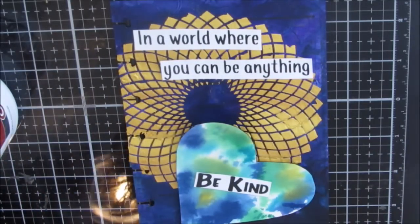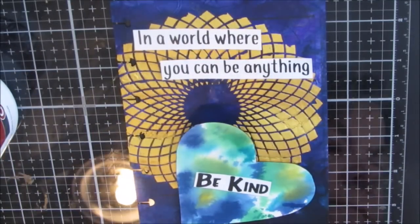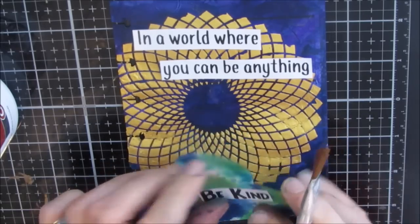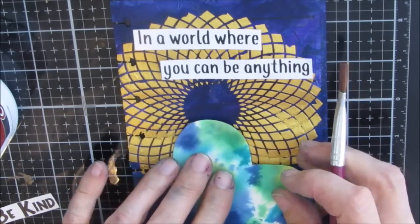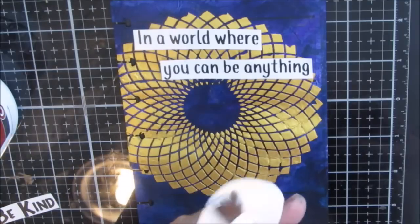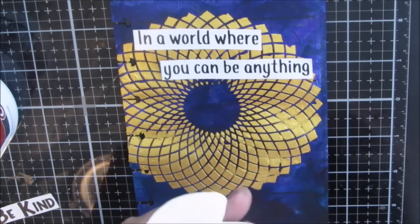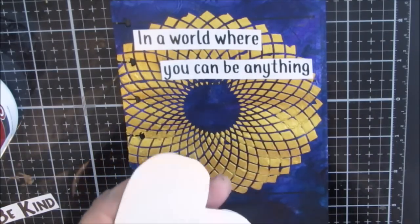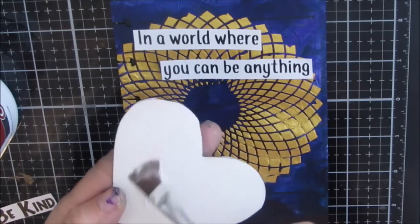So I'm grabbing the matte gel and I'm going to glue the embellishment down, the heart embellishment as well as the words. Now this is on rather thick watercolor paper and I'm gluing it on to something that has now been textured with modeling paste.